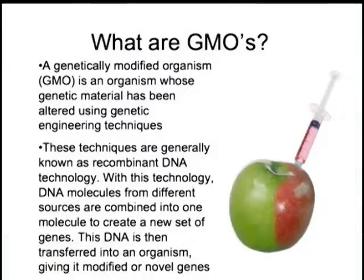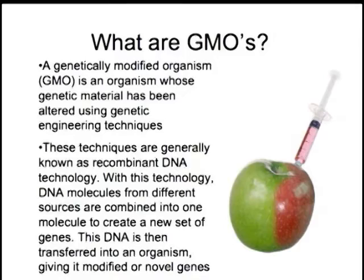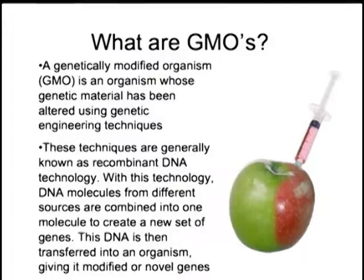A genetically modified organism, or a GMO, is an organism whose genetic material has been altered using genetic engineering techniques. These techniques are generally known as recombinant DNA technology. With this technology, DNA molecules from different sources are combined into one molecule to create a new set of genes. This DNA is then transferred into an organism, giving it modified or novel genes.